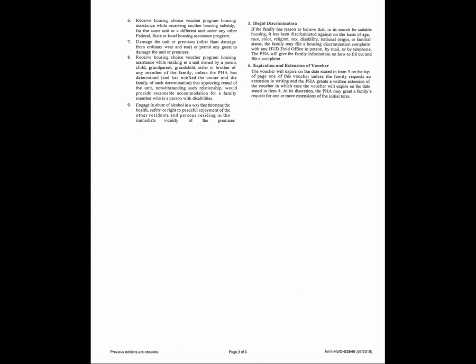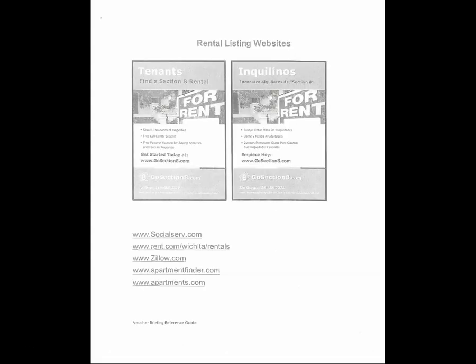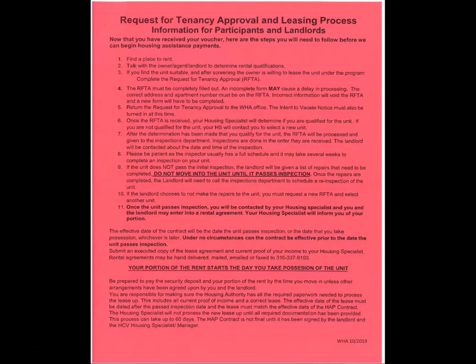Once you find a unit that you are interested in renting and the landlord agrees to participate in the HCV program, you will need to complete the Request for Tenancy Approval packet with the landlord and return the packet to the WHA office located at 455 North Main, 10th Floor, Wichita, KS 67202.